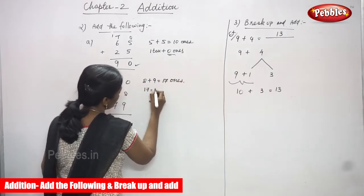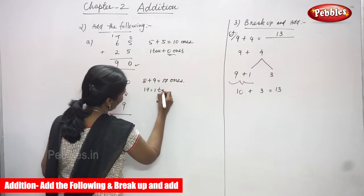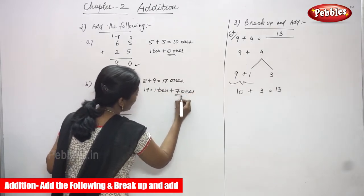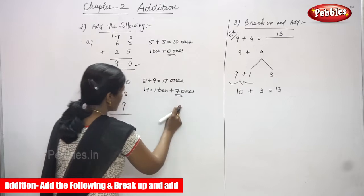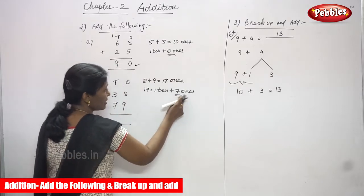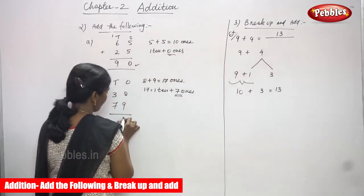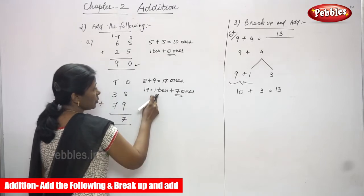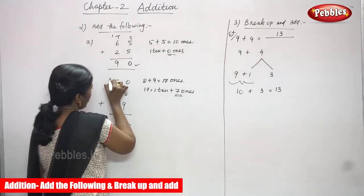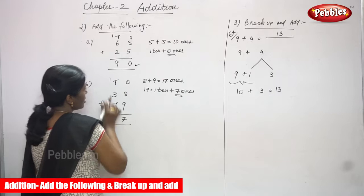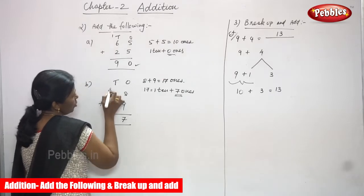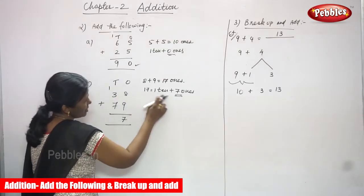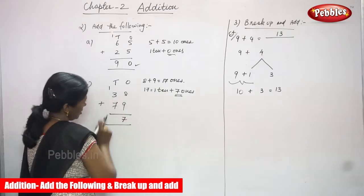Yes, seventeen! Eight plus nine gives seventeen. That means seventeen ones — how do I write that? Seventeen is equal to one ten plus seven ones. So the ones place value is seven, and I write seven here in the ones place. The one ten is the carry over going to the tens place.